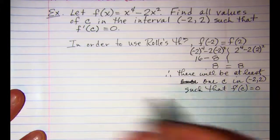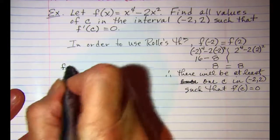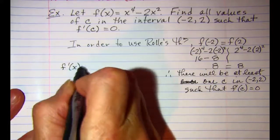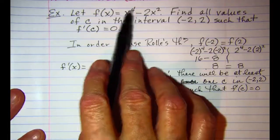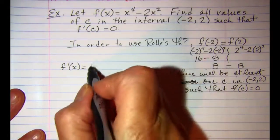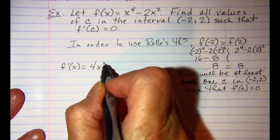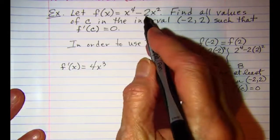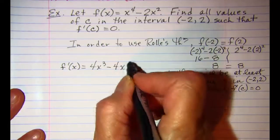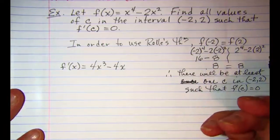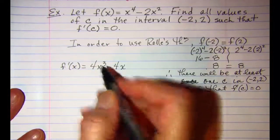Our next step is to find the derivative. f prime will be, let me just use the power rule, 4x to the third power minus 4x to the first power and then we want to set this equal to zero